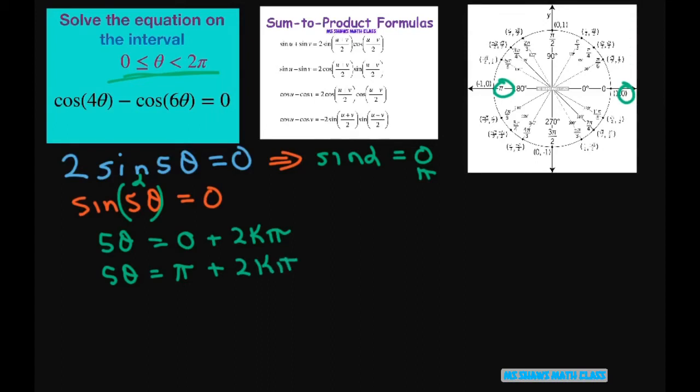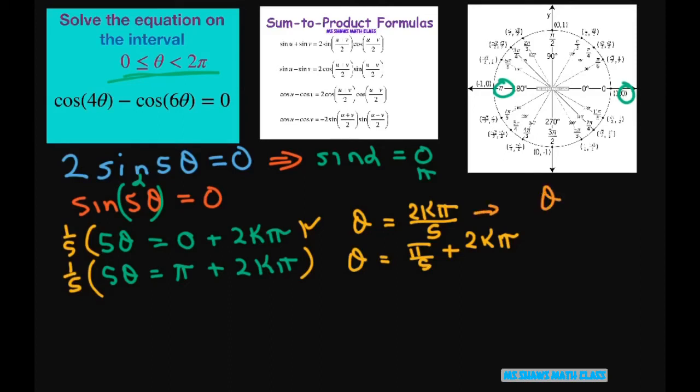Now if you divide everything by 5 or multiply everything through by 1/5, we're going to get θ. For this one the zero just goes away so we get 2kπ divided by 5. From here if we have k as 0, for this one we'll just get θ equals 0. We already have that solution. Remember we already have two solutions as 0 and π from the first one we did.